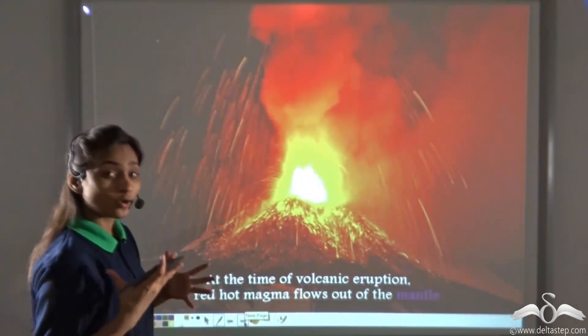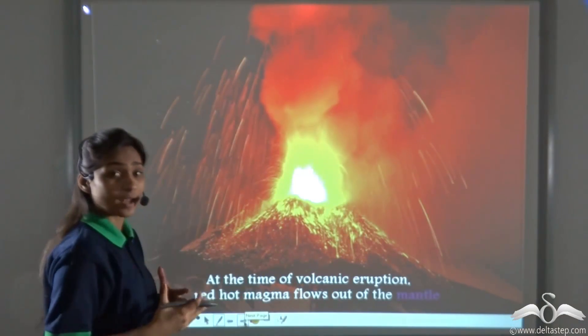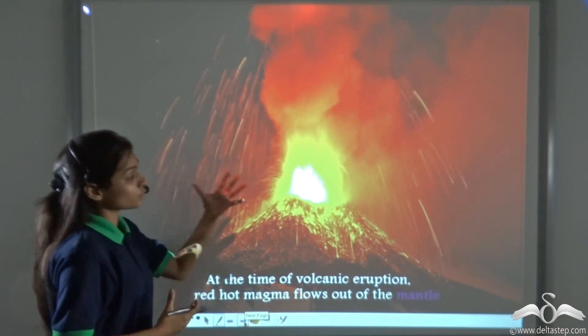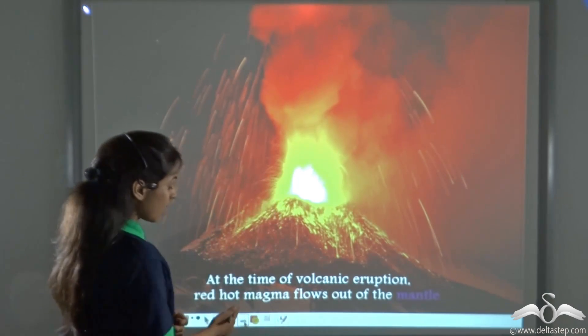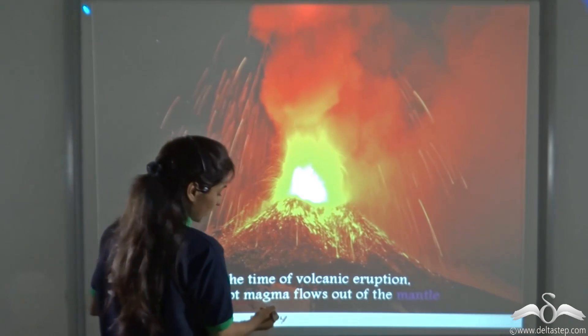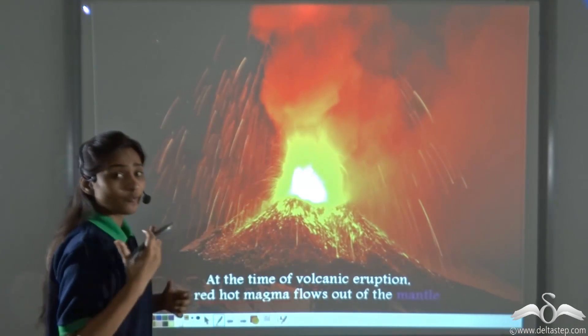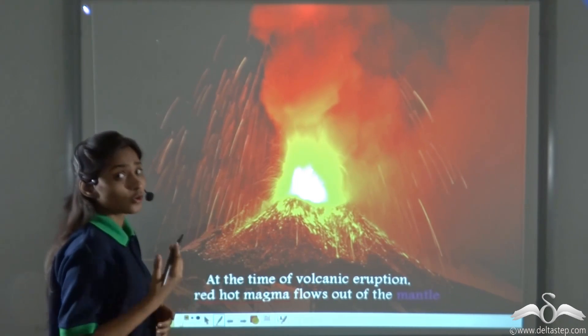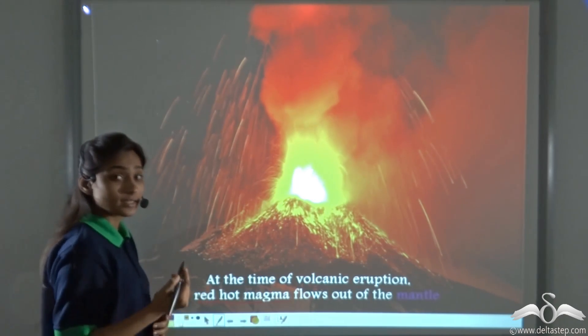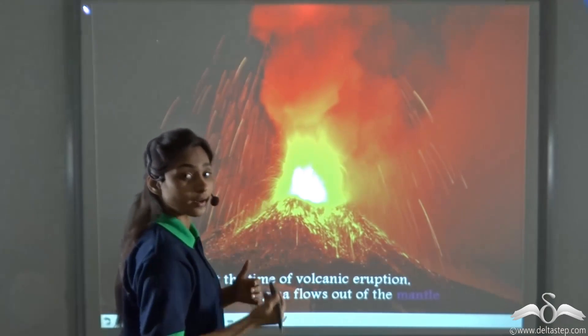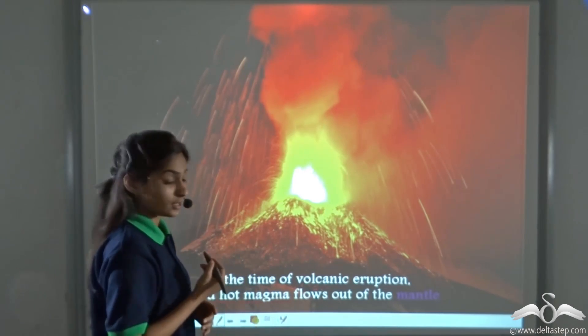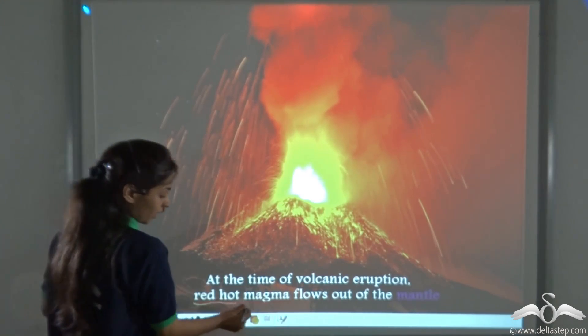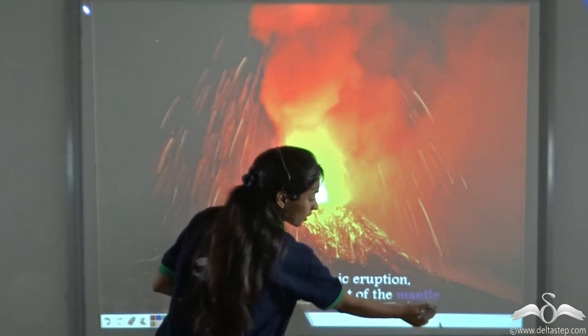Now you may have heard about volcanic eruptions in Japan, in Philippines. Now when these volcanic eruptions take place, magma, that is the red hot magma flows out. Now from where is this red hot magma coming? From the crust of the earth? No, it comes from inside the earth, from a layer below the crust which is called the mantle. So at the time of volcanic eruption, the red hot magma flows out from the mantle.